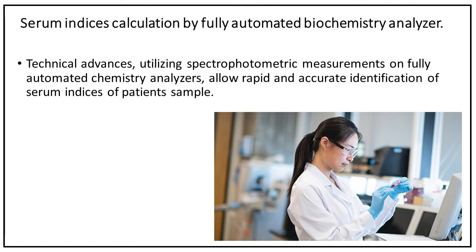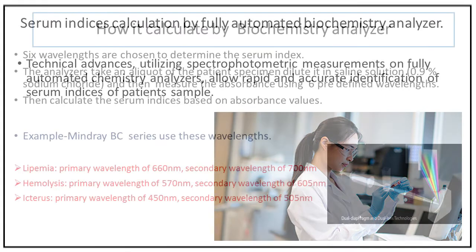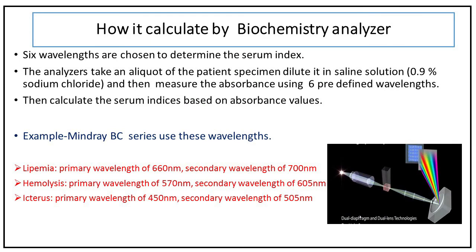Serum indices can also be calculated by a fully automated biochemistry analyzer. Technical advances utilizing spectrophotometric measurements on fully automated chemistry analyzers allow rapid and accurate identification of serum indices. The analyzer takes an aliquot of the patient specimen diluted in saline solution (0.9% sodium chloride), measures the absorbance using six predefined wavelengths, and then calculates the serum indices based on those absorbance values.